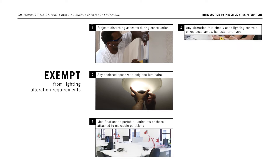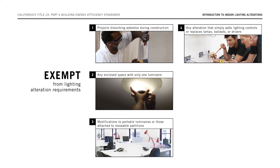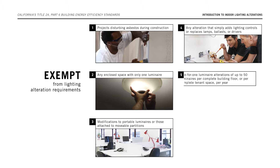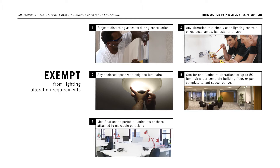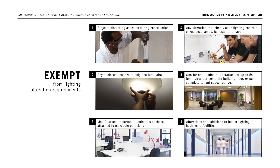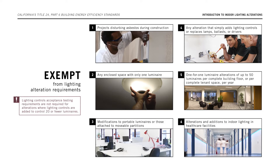Additional exemptions include any alteration that simply adds lighting controls or replaces lamps, ballasts, or drivers; one-for-one luminaire alterations of up to 50 luminaires per year per complete building floor or complete tenant space; and alterations and additions to indoor lighting in healthcare facilities. Also, acceptance testing requirements are not required for alterations where lighting controls are added to control 20 or fewer luminaires.